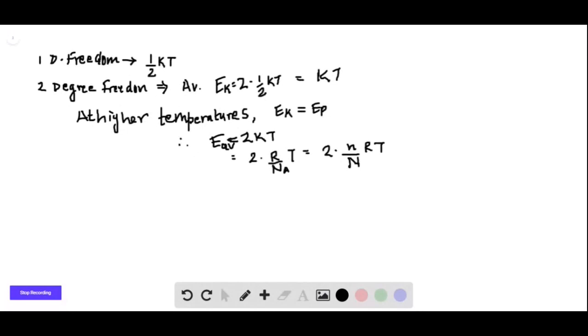So this equals two times—Avogadro's number is the total number of molecules. This is average energy for one molecule, so Avogadro's number N over N times RT. Multiply this to the other side: E average into N is E total. Total means of all molecules. This Ek equals Ep is for a single molecule.